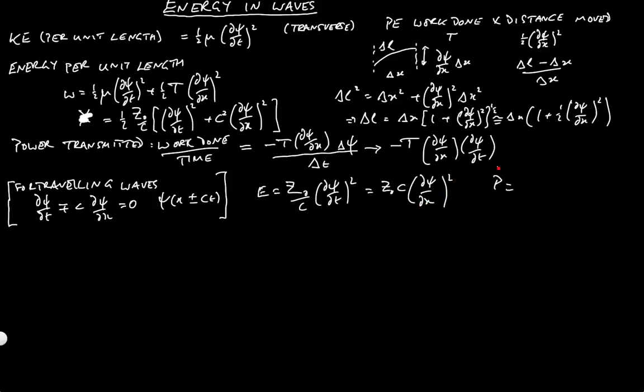And p is equal to minus or plus c times e, which is equal to minus or plus z0 dpsi by dt all squared. That makes sense. So a wave moving in the negative x direction, that is a psi of x plus ct, has a power which is negative. In other words, the power is traveling in the negative x direction.